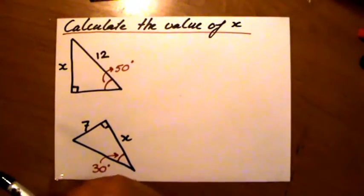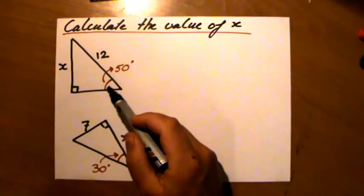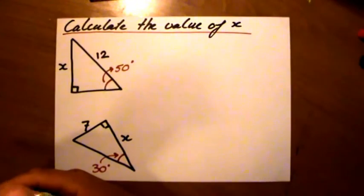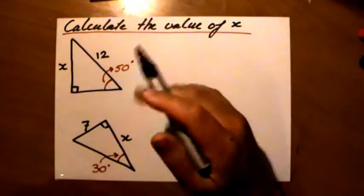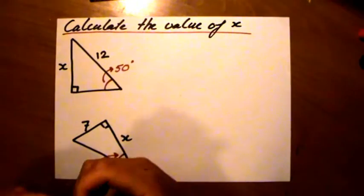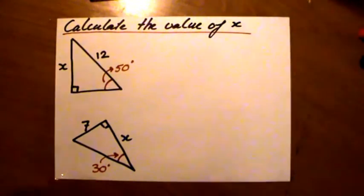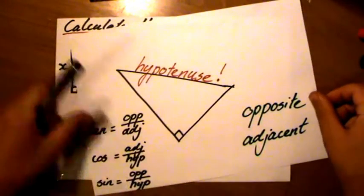However, the question gives me more information because it gives me this angle here of 50 degrees. Then I find this different strategy, this different method to solve this problem, because we can use trigonometry. A quick revision of what trigonometry is exactly about. I drew a situation here.